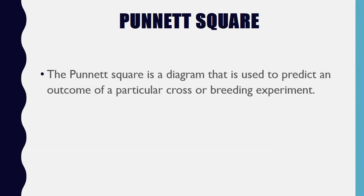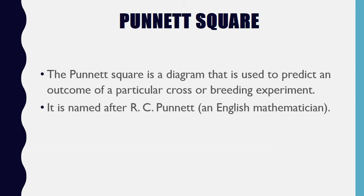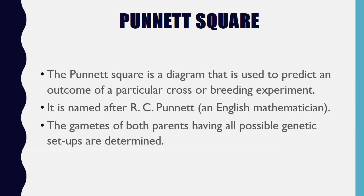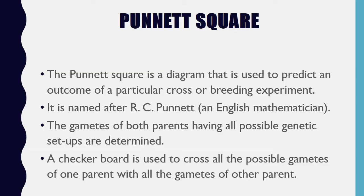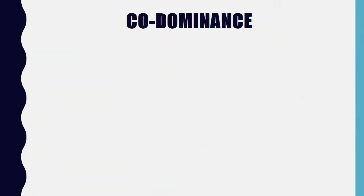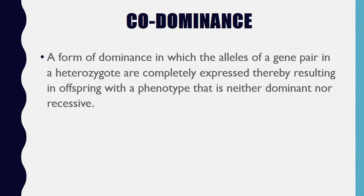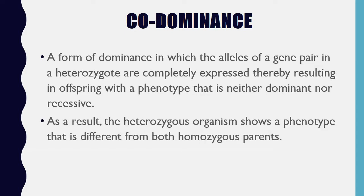Punnett Square: a diagram used to predict the outcome of a particular cross or breeding experiment, named after R.C. Punnett, an English mathematician. The gametes of both parents having all possible genetic setups are determined, and a checkerboard is used to cross all possible gametes of one parent with all gametes of the other parent. Codominance: a form of dominance in which the alleles of a gene pair in a heterozygote are completely expressed, resulting in offspring with a phenotype that is neither dominant nor recessive. The heterozygous organism shows a phenotype different from both homozygous parents.